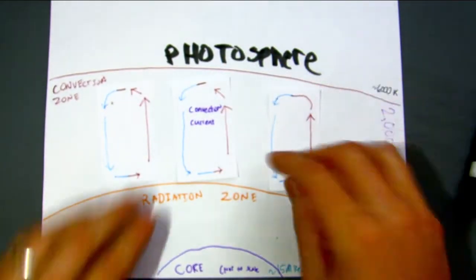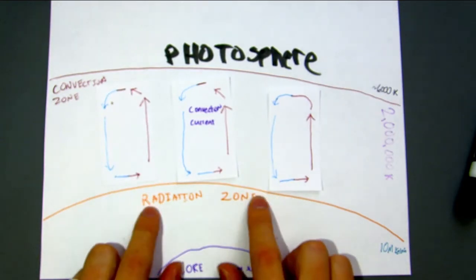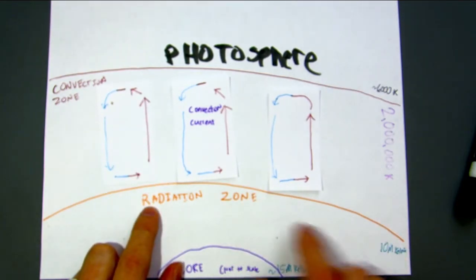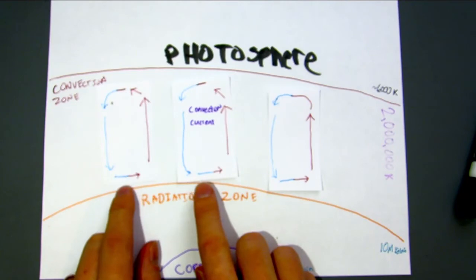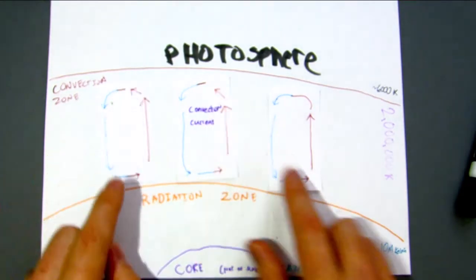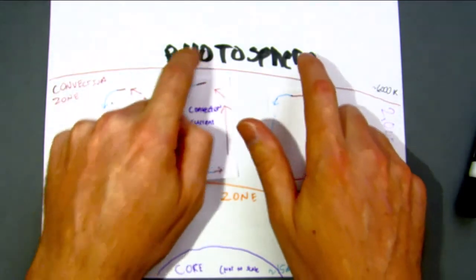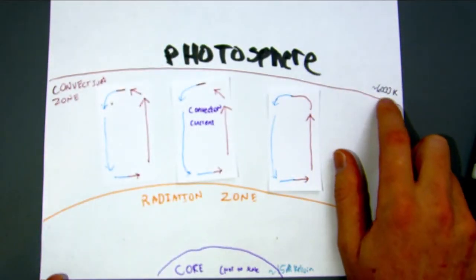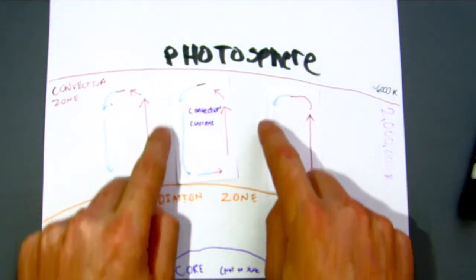So what happens is at the bottom, it's obviously hotter, 10 million Kelvin in the radiation zone. And so the gases and some plasma in the convection zone heat up, rise to the top because hot objects are less dense. And when they hit the cooler photosphere, only 6,000 Kelvin, they cool down and sink again.